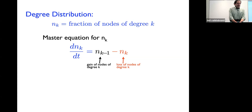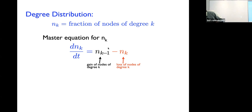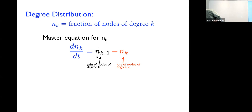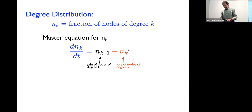The fraction of nodes of degree k can change in two ways. A gain term arises when I take a node of degree k−1 and attach a link to it, increasing the count at degree k. A loss term occurs when I attach to a node of degree k, removing it from degree k. The coefficient in front is 1 because the link introduction rate was chosen to be N/2, making the average degree grow at rate 1.